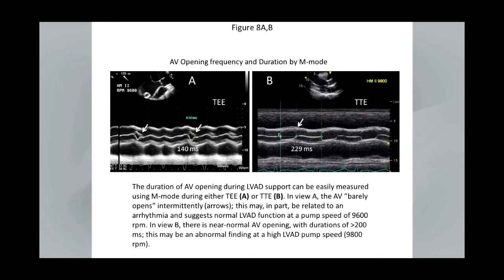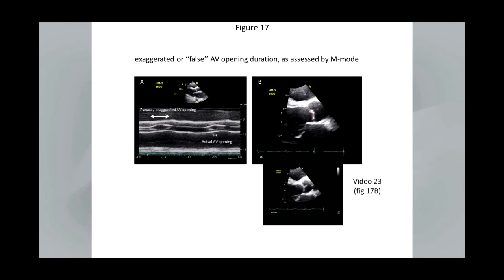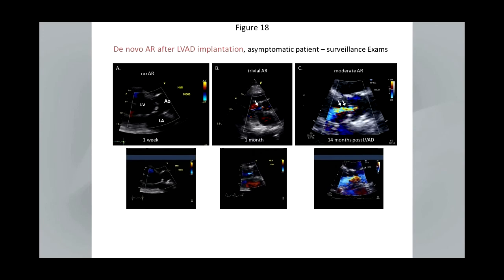Aortic valve imaging is important after these devices. M-mode can be used for looking at the duration and degree of opening and the frequency of opening of the aortic valve, which certainly can vary in these patients. This is an example of aortic valve opening at different speeds in the same patient — you may need a slower sweep speed to capture enough cycles to see if the valve is opening intermittently. If some of your speed change parameters are influenced by the degree of aortic valve opening, it's important to realize that the semilunar nature of the aortic cusp can give the appearance that the valve is opening when it's really not.